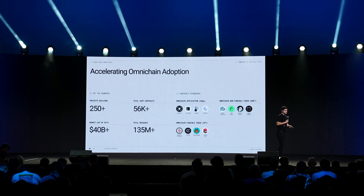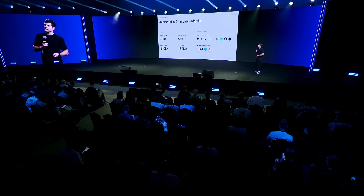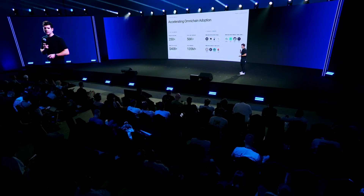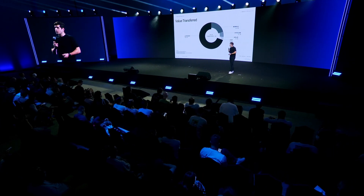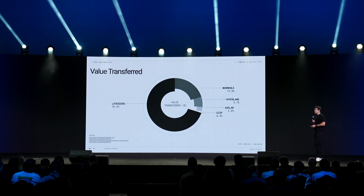Many projects are building on Layer 0. We have 56,000 omni-chain contracts that have been developed. The market cap of all tokens built with Layer 0 is over $40 billion. Some very popular projects like Wrapped Bitcoin — one of the most popular DeFi assets in all of crypto — are enabled with Layer 0. Stargate, as well as Pendle and EtherFi, which have billions of dollars in TVL, also run on Layer 0, as well as some of the most valuable NFT collections like Pudgy Penguins. Layer 0 has produced 70% of all value transferred across chains over the course of the last year.